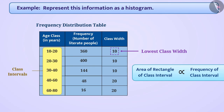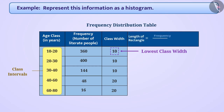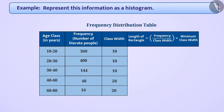Now we will change the lengths of the rectangles in such a way that class width is proportional to 10. For this, we will divide the frequency of each class interval by its class width and multiply it by the minimum class width of 10. Thus the length of the rectangle for the age group 10 to 20 will be 360 divided by 10, multiplied by 10, which equals 360. Since the class width of the interval 10 to 20 is already 10, there was no change in the length of its rectangle.